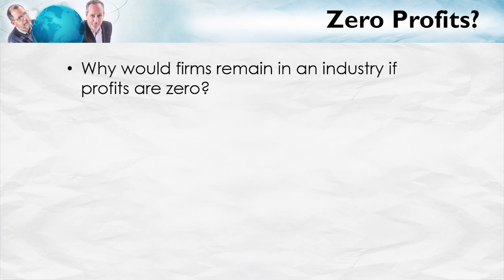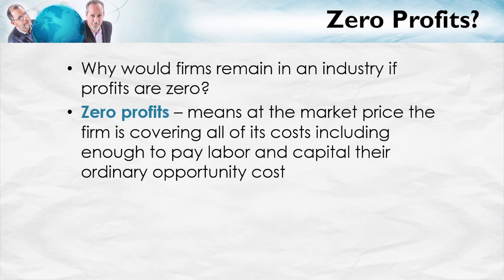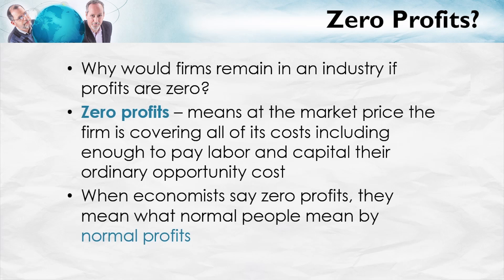Now you might ask: why would firms remain in an industry if profits are zero? Zero profits — this is just a matter of terminology — means that at the market price the firm is covering all of its costs, including enough to pay labor and capital their ordinary opportunity cost. So zero profits means everyone is being paid enough to make them satisfied. Zero profits, in other words, is what normal people mean by normal profits. So when an economist says zero profits, just substitute normal profits.